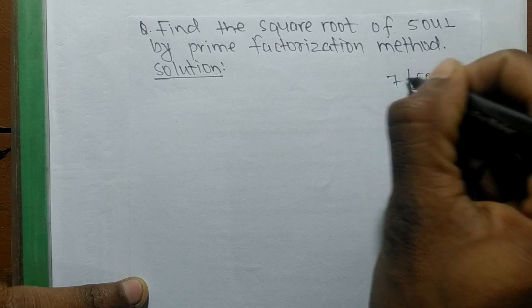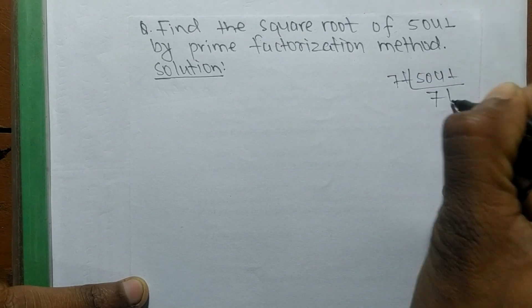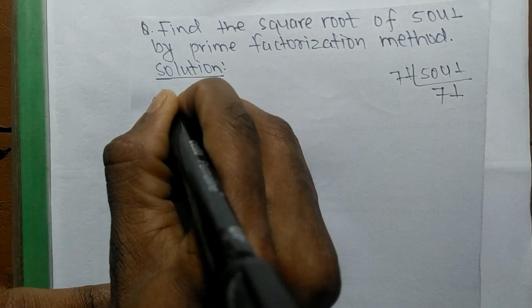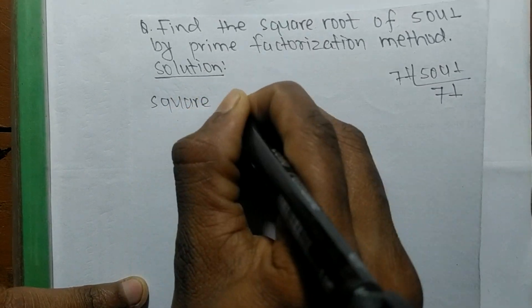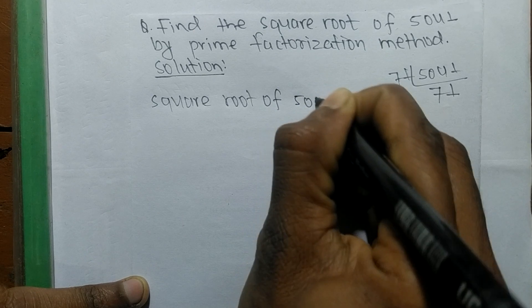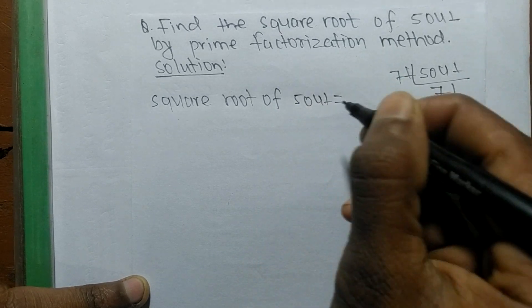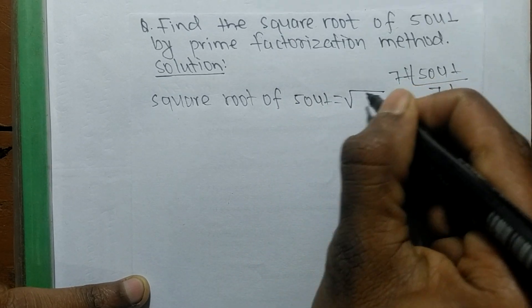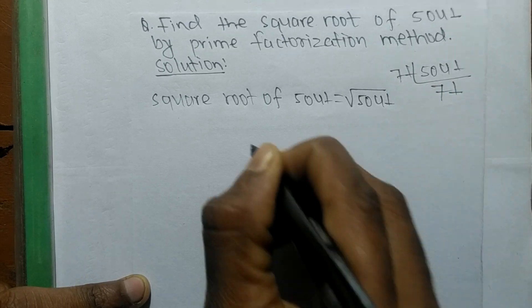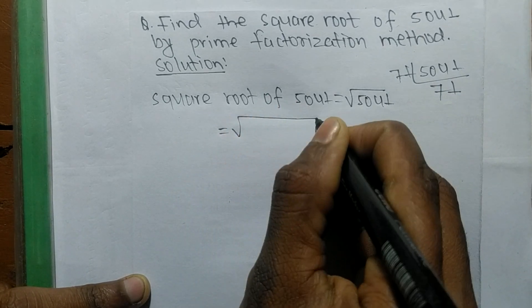It is equal to 71 times 71, which equals 5041. Now we can write the square root of 5041 using the square root sign. From the prime factorization,